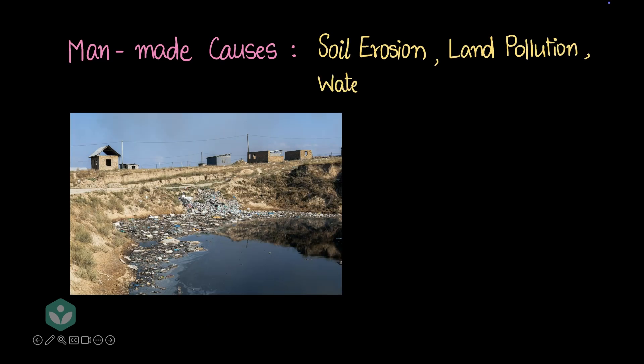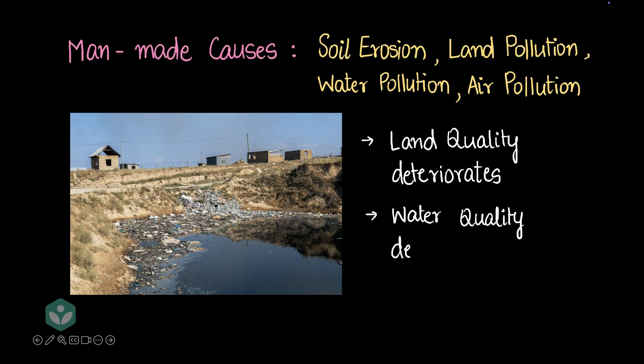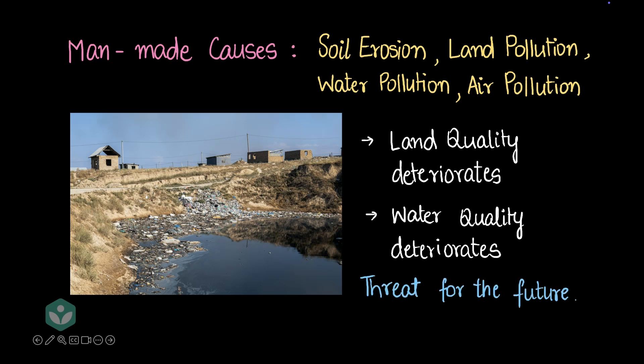The next man-made cause is soil erosion, land pollution, water pollution, and air pollution. Due to all of these, land quality and water quality deteriorate, leaving very bad land and water for irrigation so we can't grow any more crops. This is a threat for the future — people have had to abandon agricultural land because of pollution, and this trend is increasing because of the rate at which we are polluting the earth.